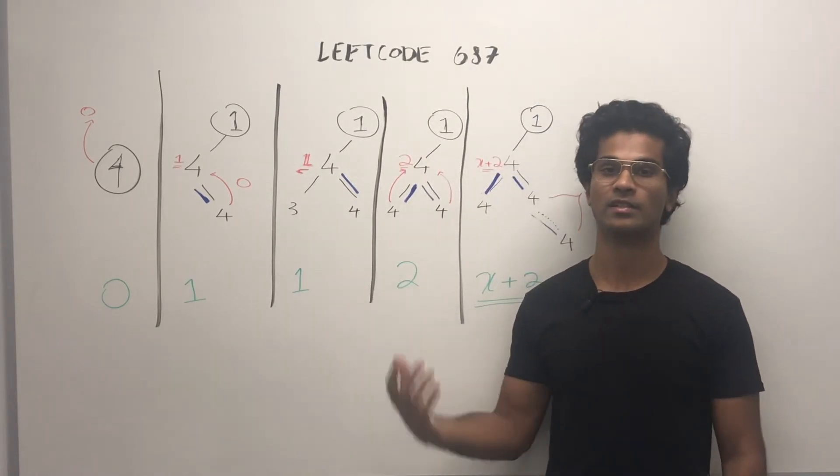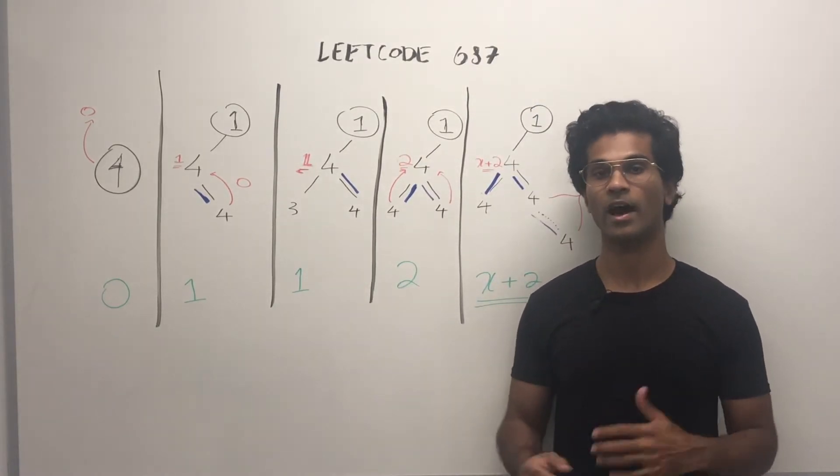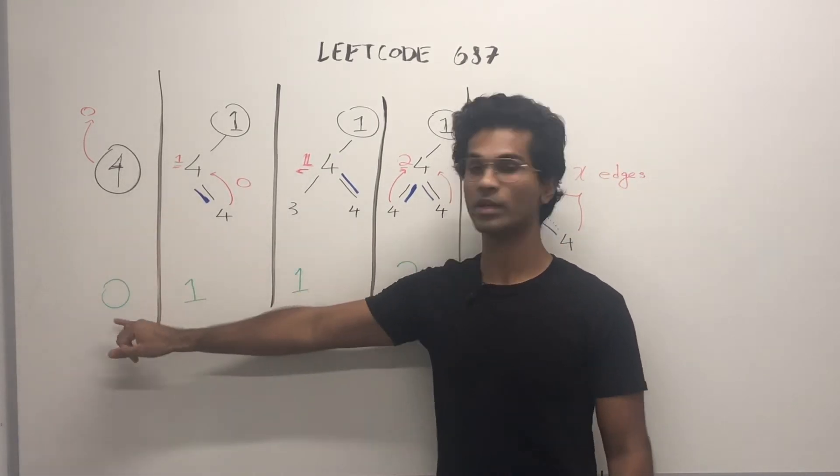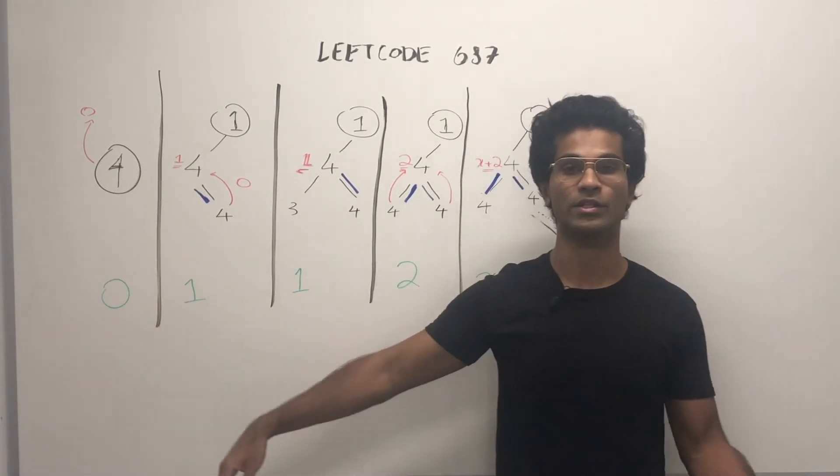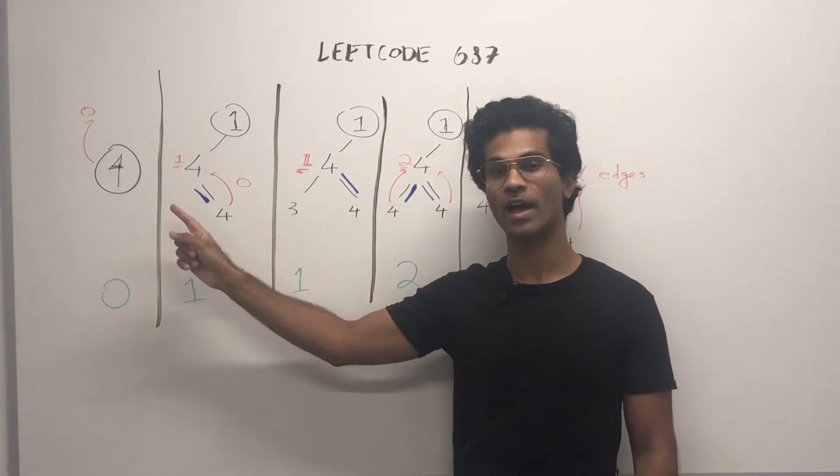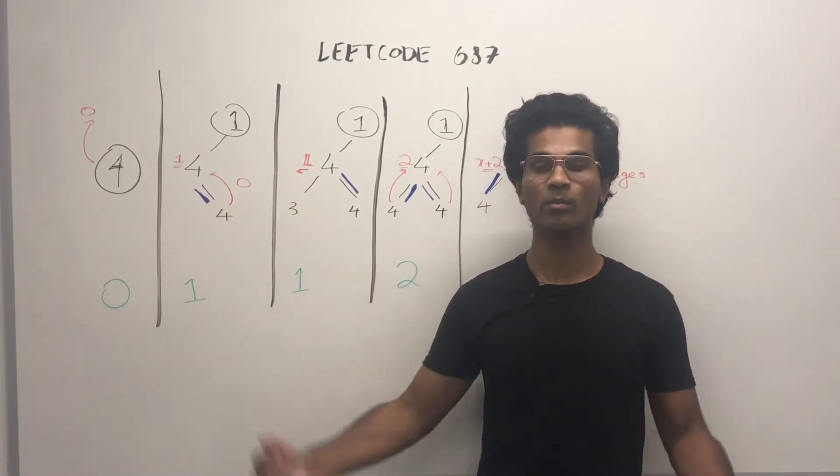Here are a few cases that's going to help us understand how to approach this problem. Let's say we have a root node of 4. The output is going to be 0 because we have no edges. In this case we have a root node of 1, a 4, and a 4 on the right side. The output is going to be 1.